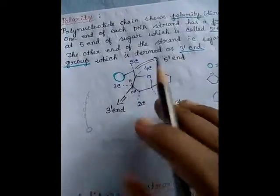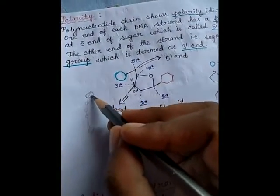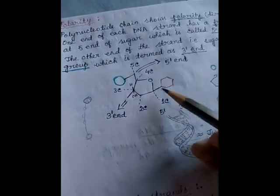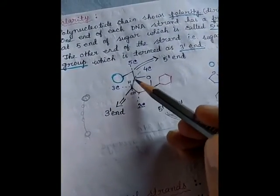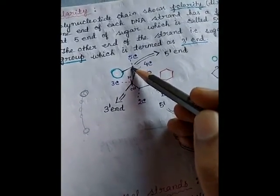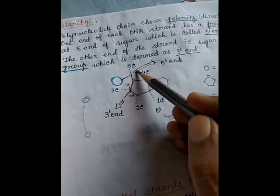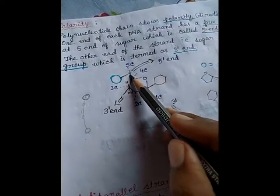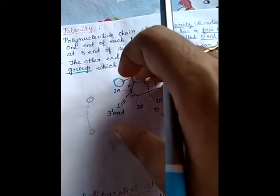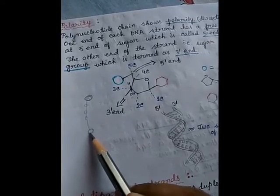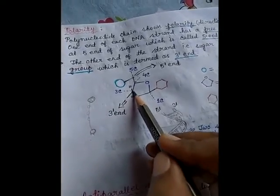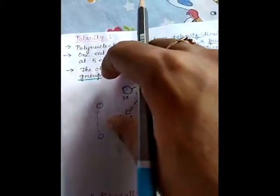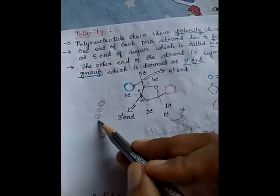If this is the first nucleotide of the chain, its carbon positions are: first, second, third, fourth, and fifth carbon. The fifth carbon is attached with the phosphate group, and this end is called the five prime end. So in the nucleotide chain, the first nucleotide has the five prime end, and when the same structure is present at the last nucleotide, that end is called the three prime end, because all these nucleotides are attached with each other forming the polynucleotide chain.